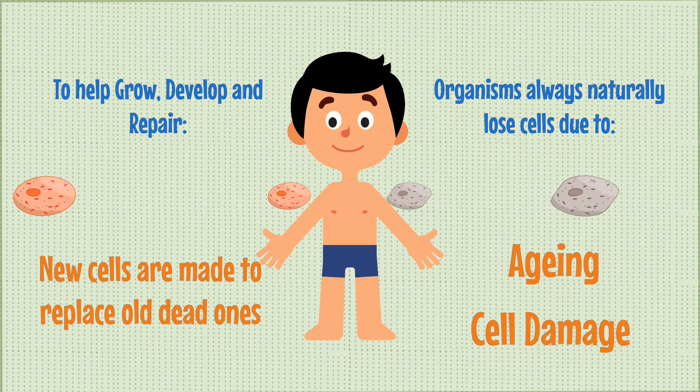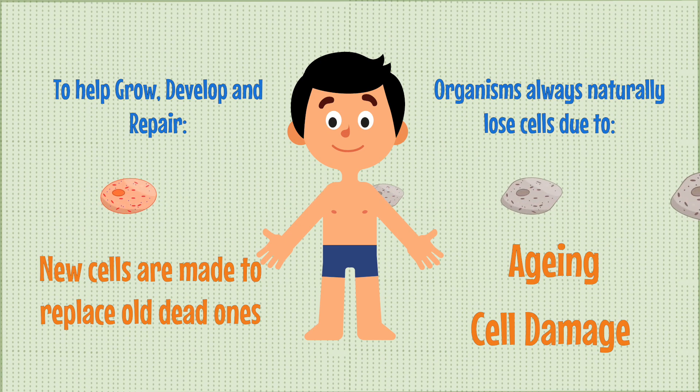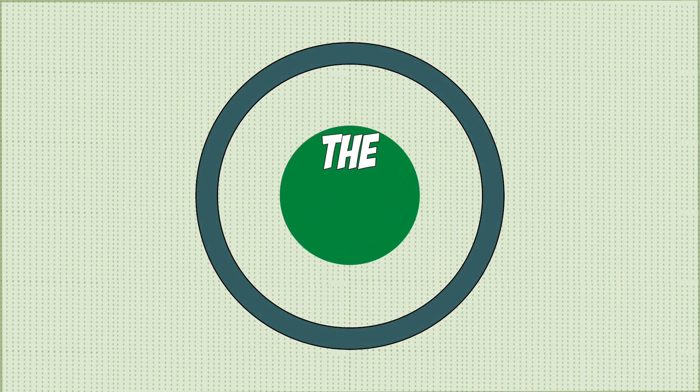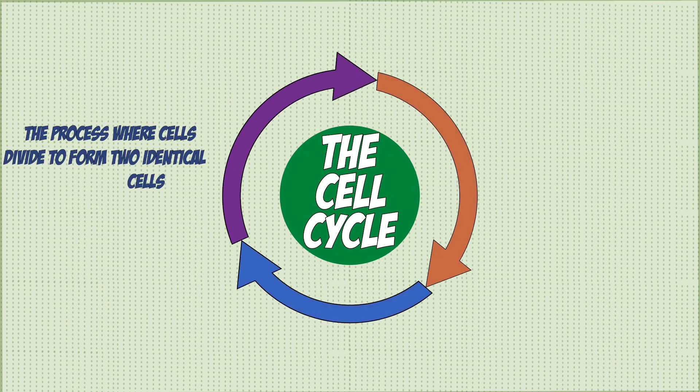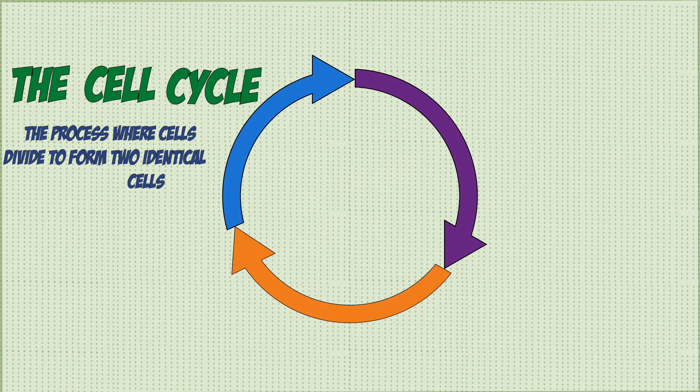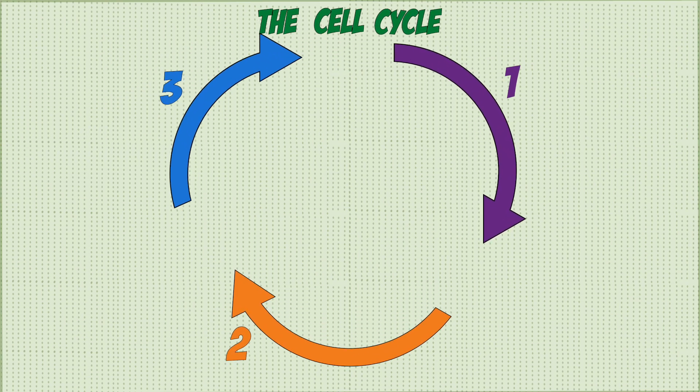This is done through a series of stages called the cell cycle, which is a process where cells divide to form two identical copies of itself, which we call daughter cells. There are three main stages to the cell cycle.